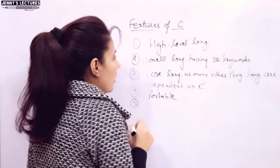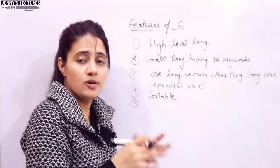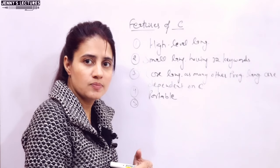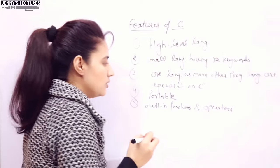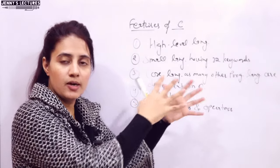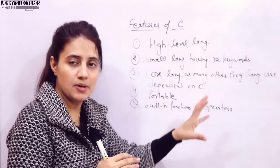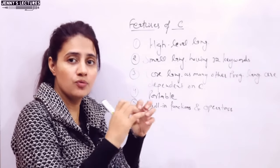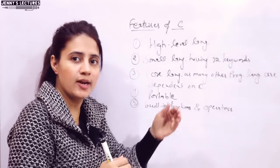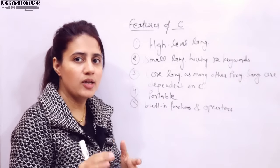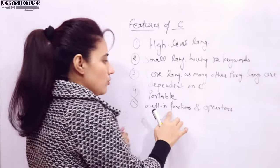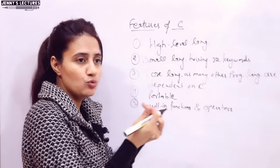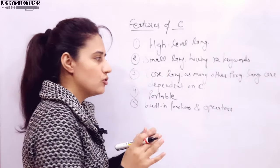The next feature is that C has built-in functions and operators. Using those functions, you can write any complex programs. Built-in functions are already defined and present in the C library — you can directly use those functions without writing their code in your program. You directly call those functions to write complex programs. We will discuss in detail how to use built-in functions and which library to include when we start writing programs.